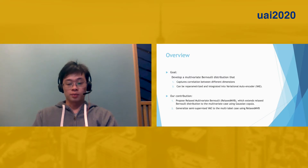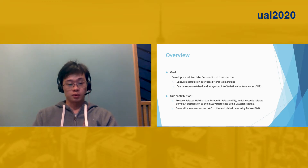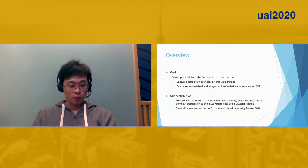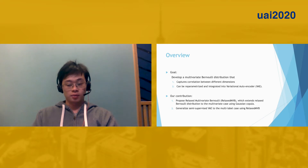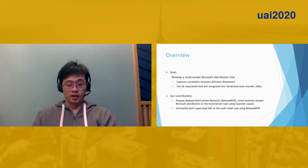Therefore, we propose Relax-Multivariate Bernoulli, a distribution that extends Relax-Bernoulli from the univariate case to the multivariate case using Gaussian Copula. And then we generalize semi-supervised VAE to the multi-label case using Relax-Multivariate Bernoulli.